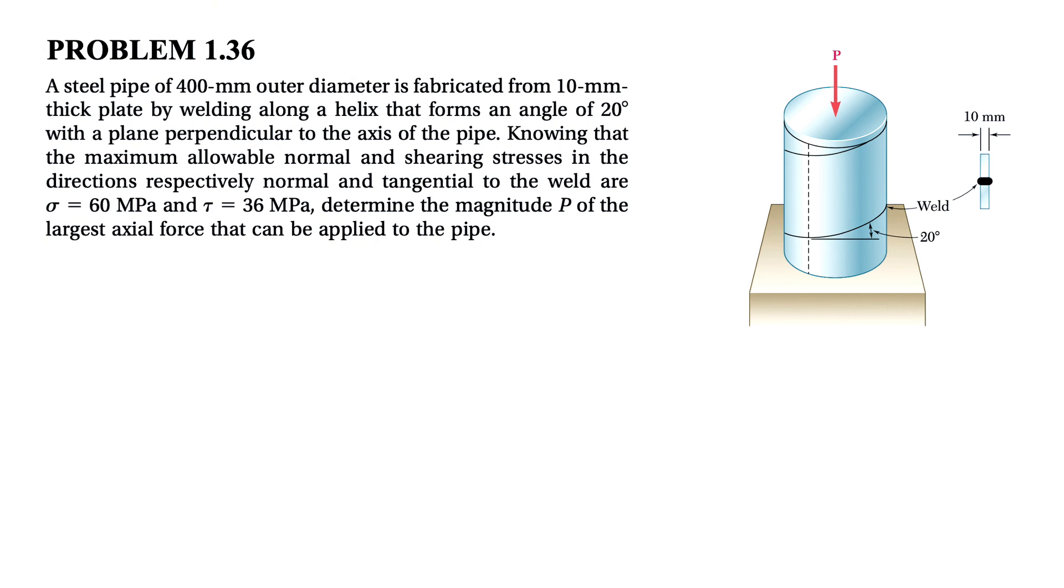We know that the maximum allowable normal and shear stress in this direction are respectively 60 MPa for normal and 36 MPa for shear stress, and we need to determine the magnitude P of the largest axial force that can be applied to the pipe.